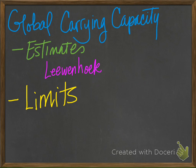The first known estimate of Earth's carrying capacity was by Leeuwenhoek — the first person to see microorganisms under a microscope — who estimated 13.4 billion people back in 1679. Other estimates have varied from less than a billion to a trillion, with an average of 10 to 15 billion.